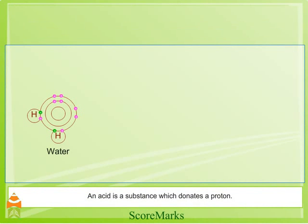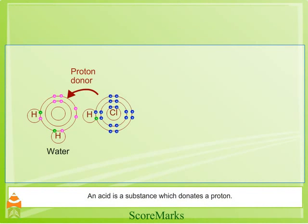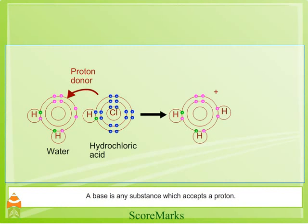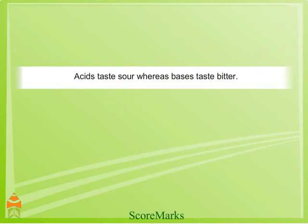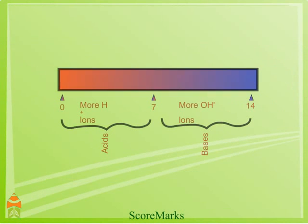An acid is a substance which donates a proton. A base is any substance which accepts a proton. Acids taste sour, whereas bases taste bitter.